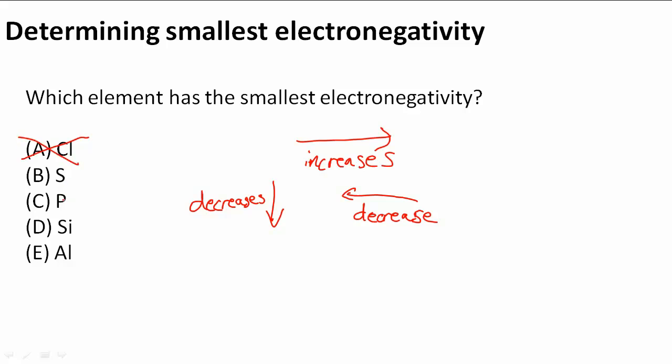Then we have P, which is also to the left of S, so that must mean it has a smaller electronegativity since it decreases when we go right to left. So S is out of the running.